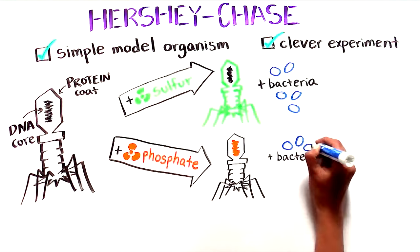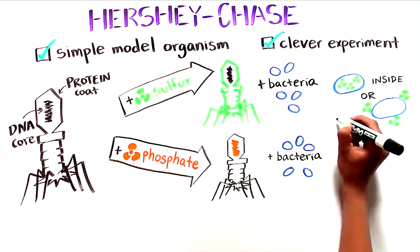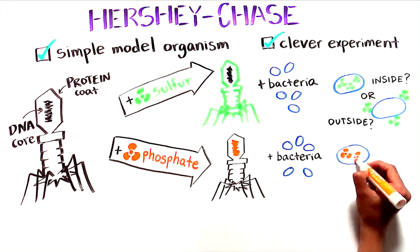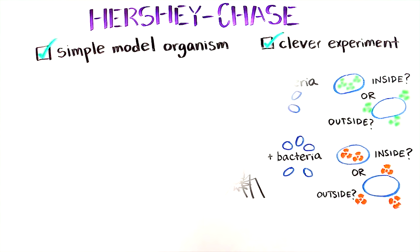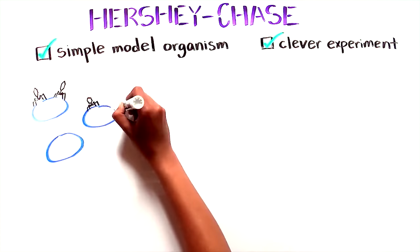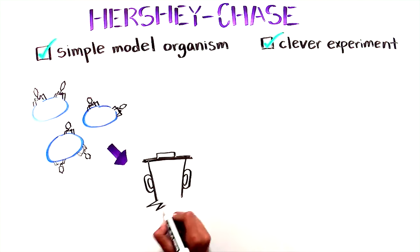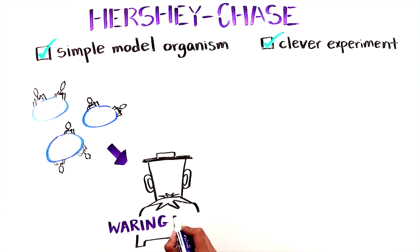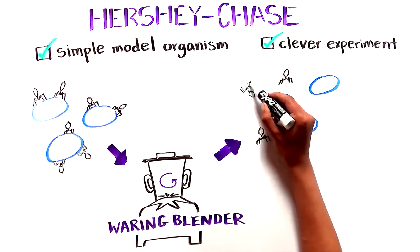After the viruses infected the bacteria, the researchers examined whether the radioactive signal was detected inside the bacteria or left outside. To do so they needed to separate the bacteria from the viruses attached to their outsides. And did so using a warring blender, similar to that used for making milkshakes. Once separated, they then centrifuged the sample.